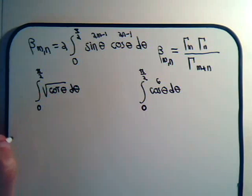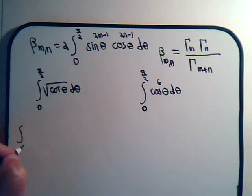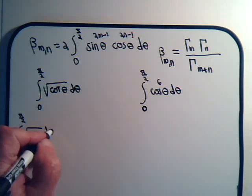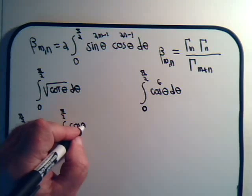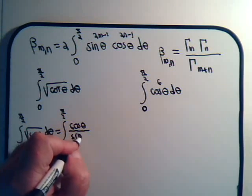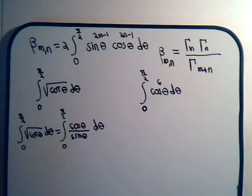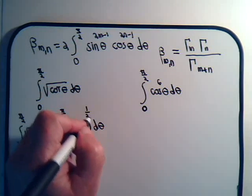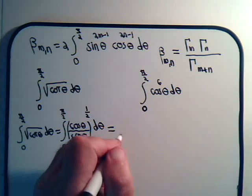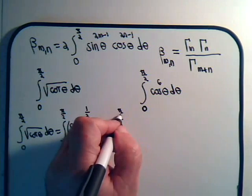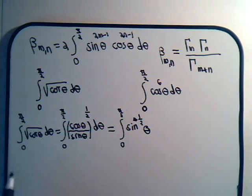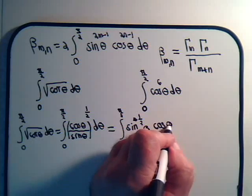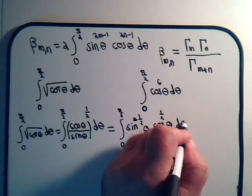Let's start with this one: the integral from 0 to π/2 of the square root of cotangent θ dθ. Let's rewrite it using the basic definition of cotangent θ — that would be cosine θ divided by sine θ, raised to the one-half power. We can take the sine of θ out of the denominator, giving us sine θ to the minus one-half times cosine θ to the plus one-half dθ.